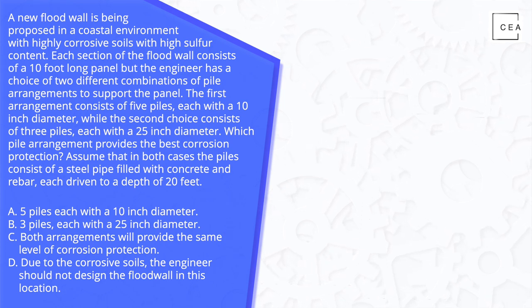The first arrangement consists of five piles each with a 10 inch diameter while the second choice consists of three piles each with a 25 inch diameter. Which pile arrangement provides the best corrosion protection? Assume that in both cases the piles consist of a steel pipe filled with concrete and rebar each driven to a depth of 20 feet.